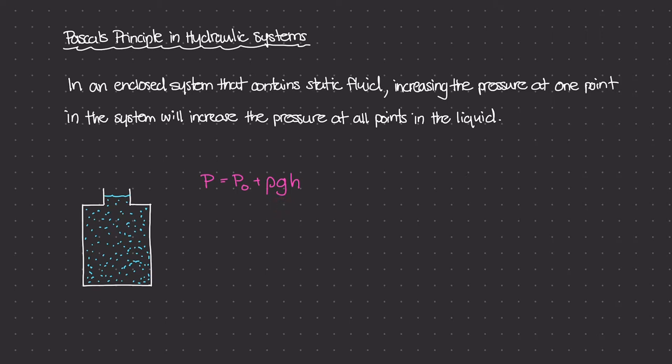So as a quick reminder, if we wanted to figure out what the pressure was at the very bottom of this container, we would simply look at this P0 value, which is the pressure from where we're taking H. In this case it's going to be at the very top, which is open to the atmosphere. So in this case, P0 is going to be 1 atm.